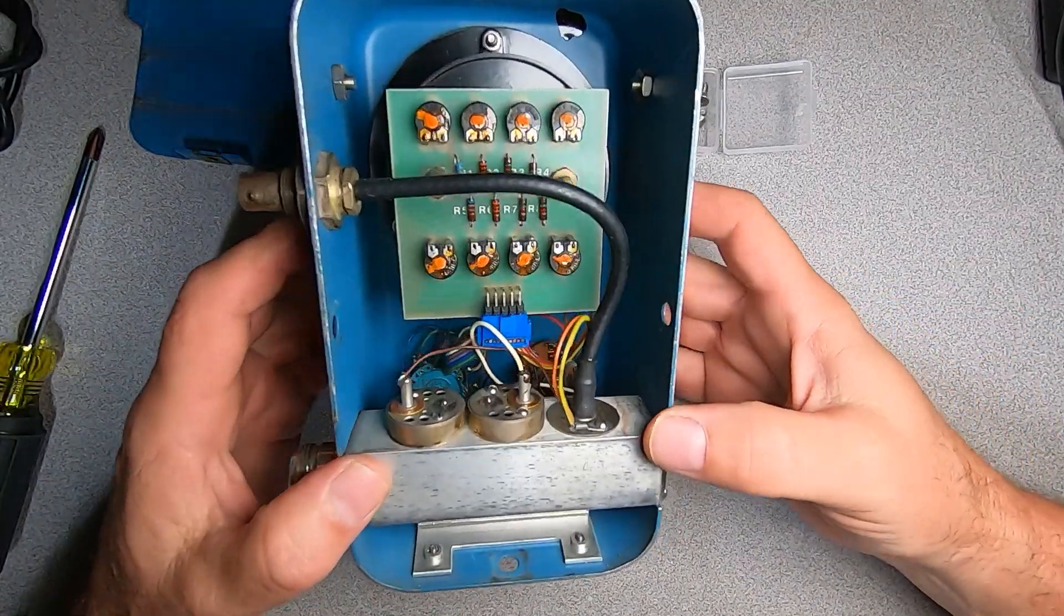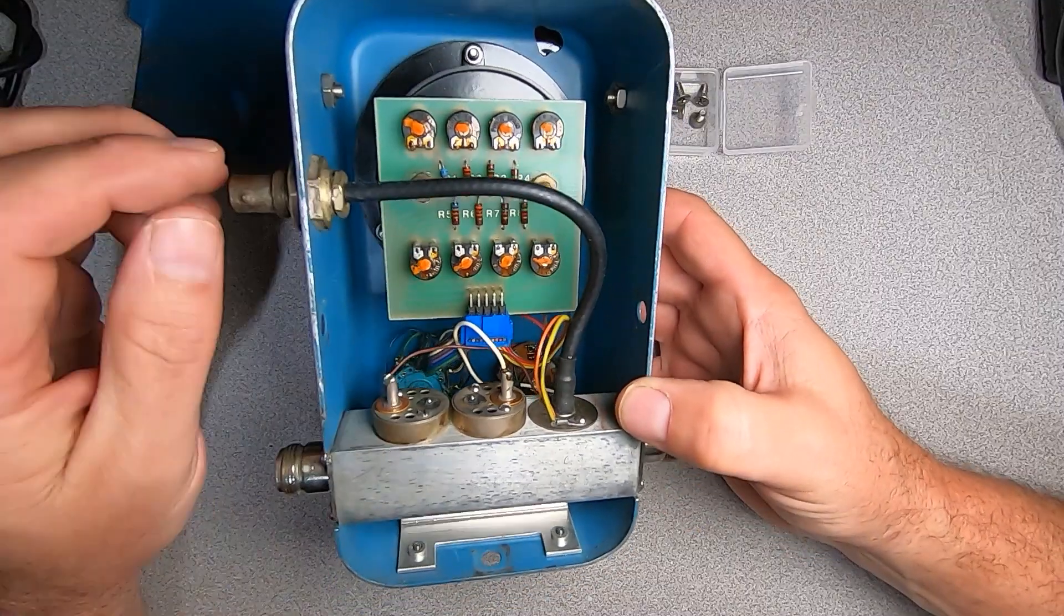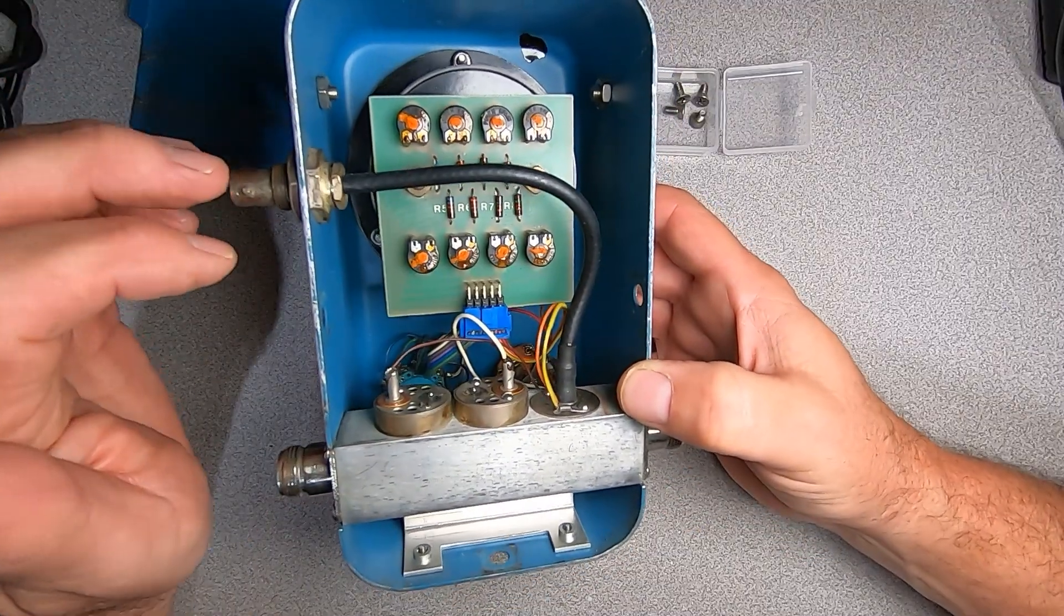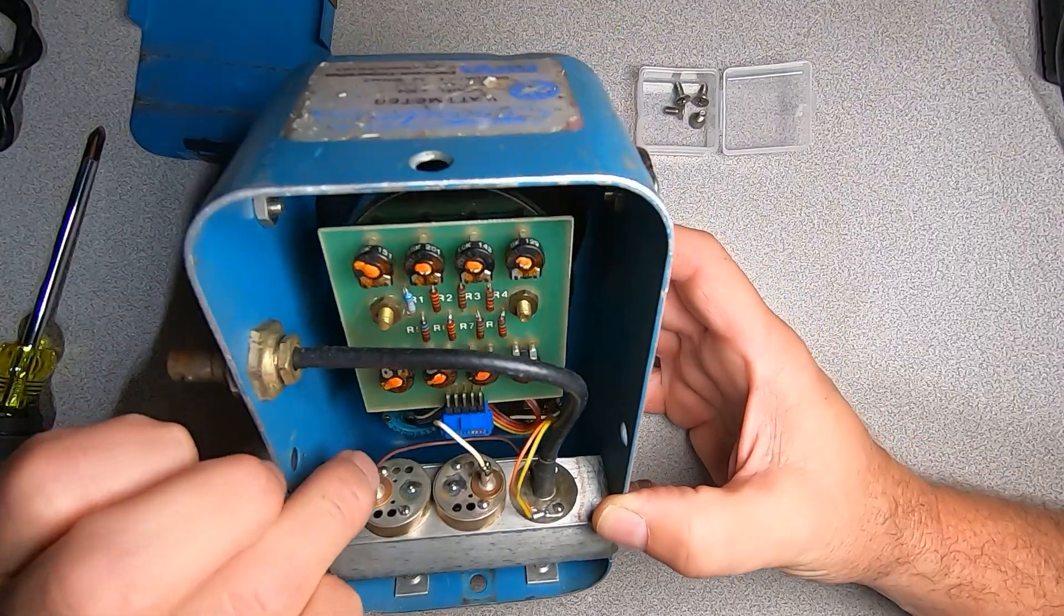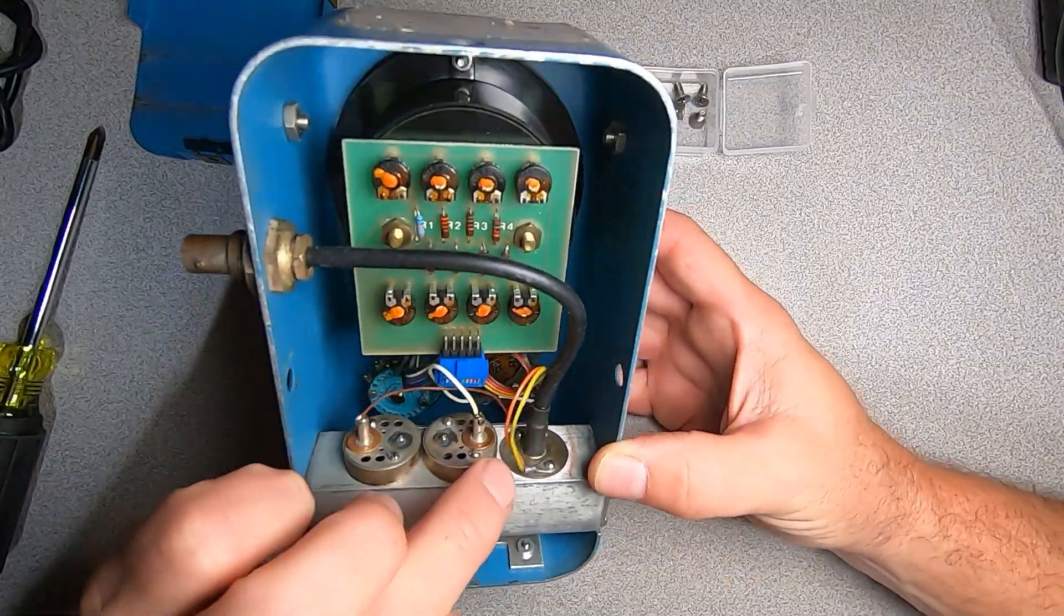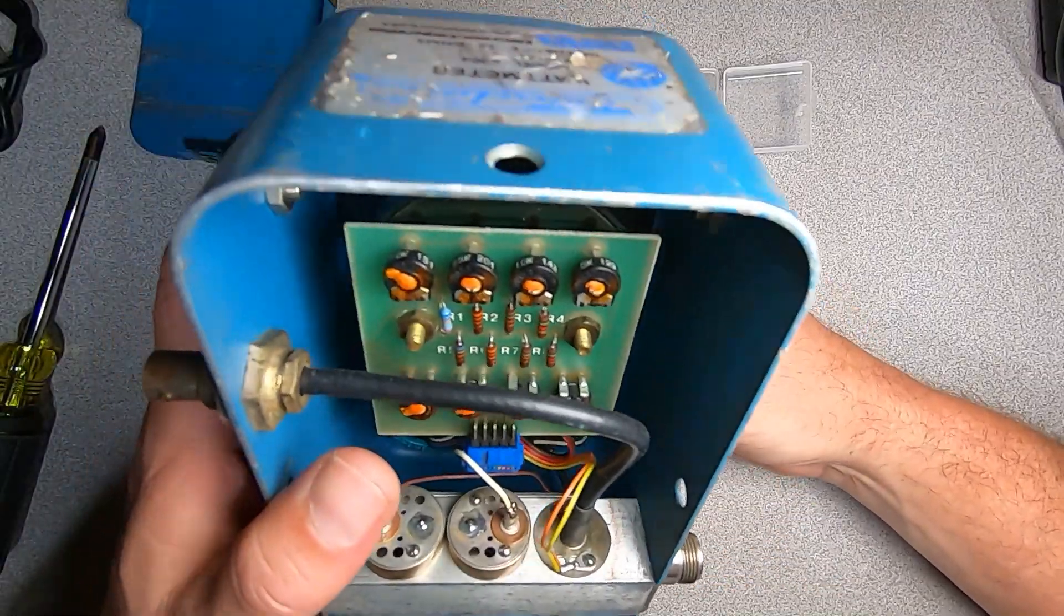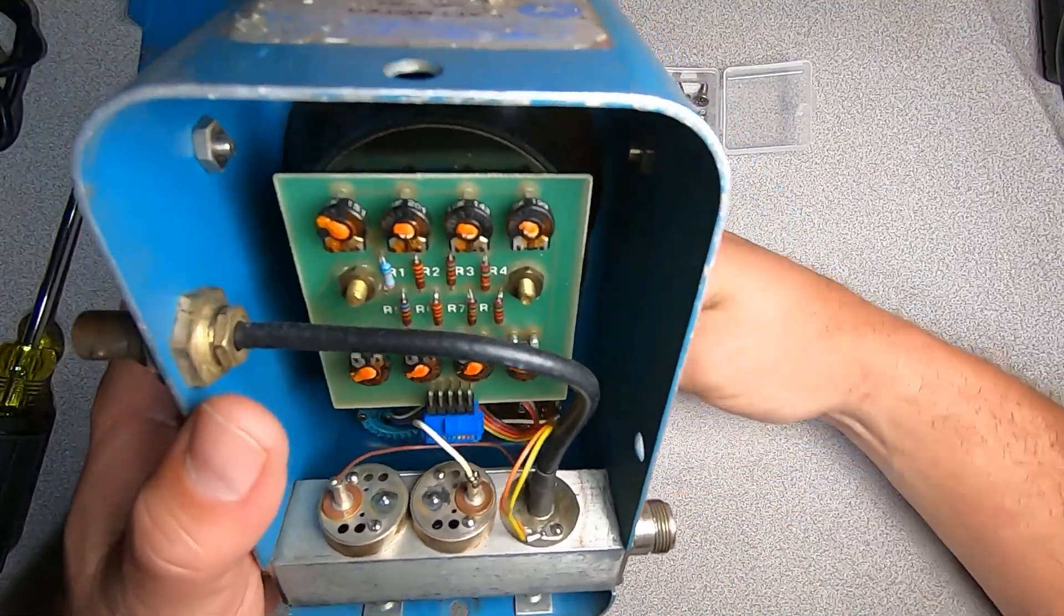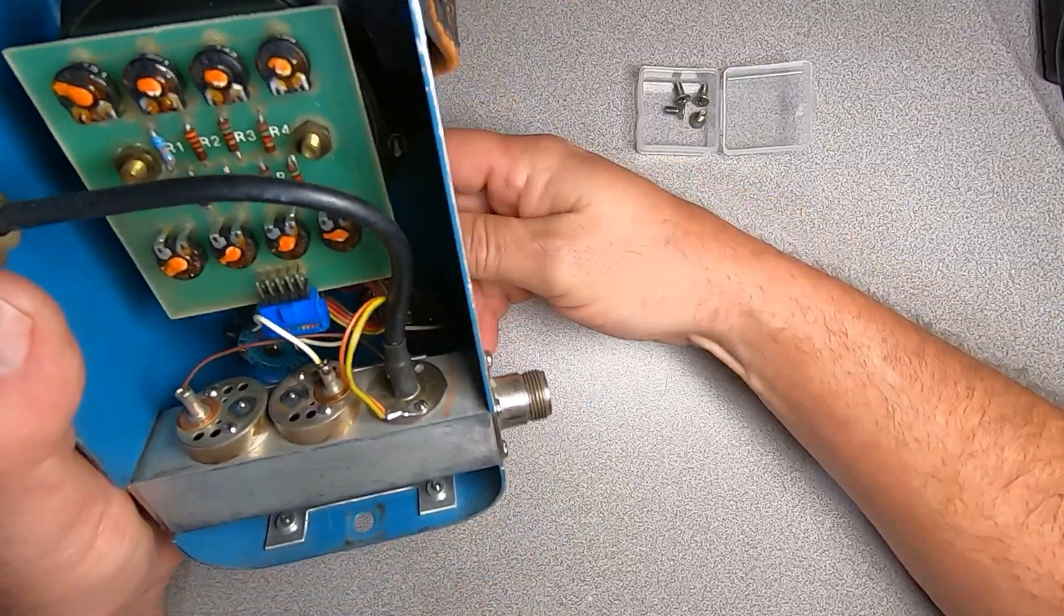You can see our line section here, our meter body with the different resistors, and the switches in the front that we're going to have to work with. This switch here is the one in question and you can see it moving around in there.